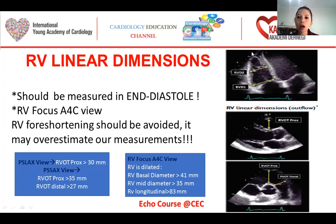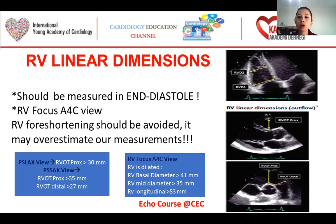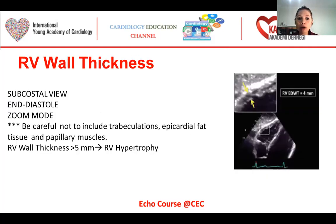In the apical RV-focused 4-chamber view, we can measure the basal, mid, and longitudinal diameter of the RV. In the parasternal long axis view, we can measure proximal and distal outflow tract dimensions, and in the parasternal short axis view, we can measure proximal and distal outflow tract dimensions to decide if the RV is dilated or not. For RV wall thickness, we do our measurement in the subcostal view in end-diastole in zoom mode. We must be careful not to include trabeculation, epicardial adipose tissue, and papillary muscle. If RV wall thickness is more than 5 mm, we can say this RV is hypertrophic.